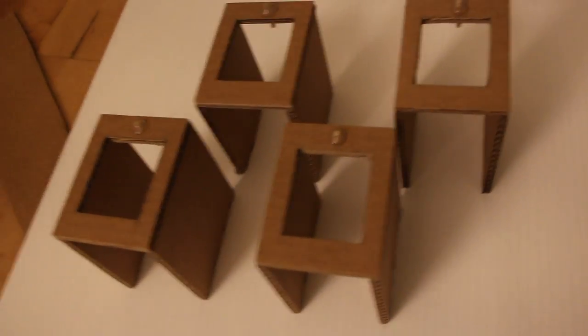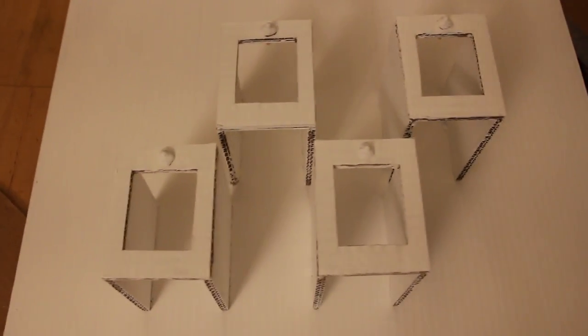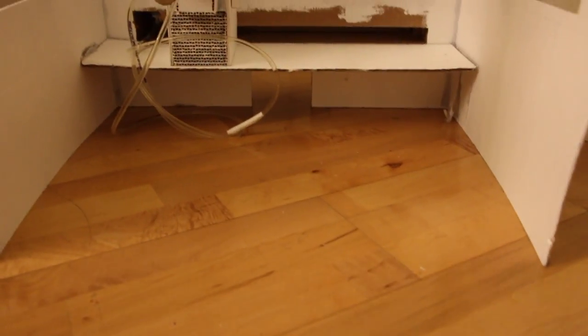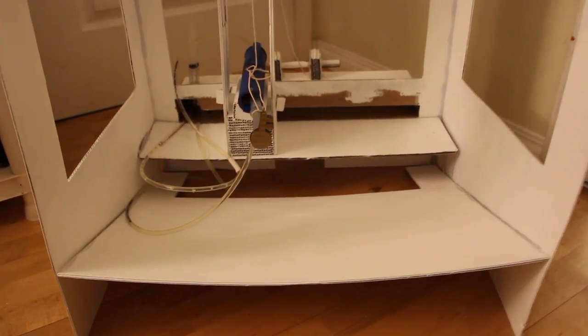Next thing I did was make the slots for the prizes. I glued those onto that back piece we made earlier and painted them white. While that was drying, I made a ramp and glued it onto the back of the machine so that when the prizes fall down, they roll towards the prize chute.